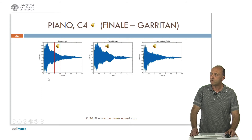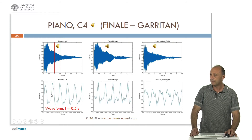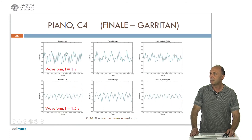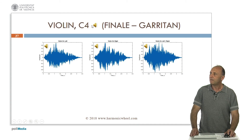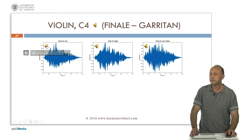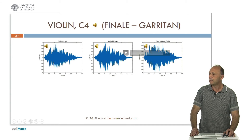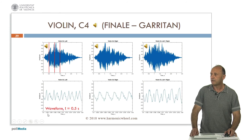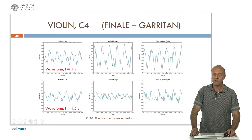We will see the waveform for different times. This is for t equals 0.5 seconds: left channel, right channel, and the sum. For t equals 1 second: left channel, right channel, and the sum. As we can see, the waveform changes with time. And now let's listen to a violin. This is the stereo sound, the left channel, the right channel, and the sum. The waveform also changes with time. Let's see the waveform for time equal to 0.5 seconds, the left channel, right channel, and the sum. For t equals 1 second, and for t equals 1.5 seconds. So in all cases the waveform changes with time.